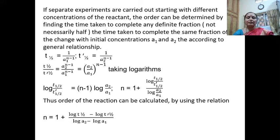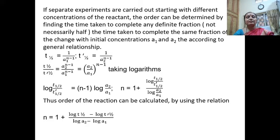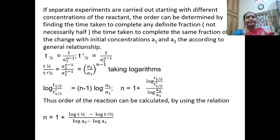What we do is carry out separate experiments starting with different concentrations of the reactants. The order can be determined by finding the time taken to complete any definite fraction, not necessarily half. For two different initial concentrations, we determine the time taken for its half-change.